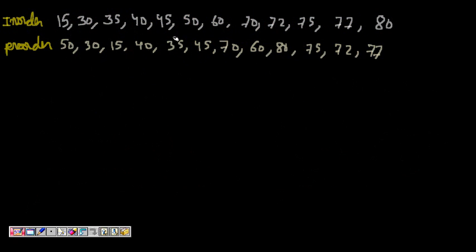Let's say we are given this. If you print in-order, the tree looks like this, and if you print pre-order, it looks like this. So now what to do? When reconstructing a tree, what is the most important thing? That's what we will try to search for.